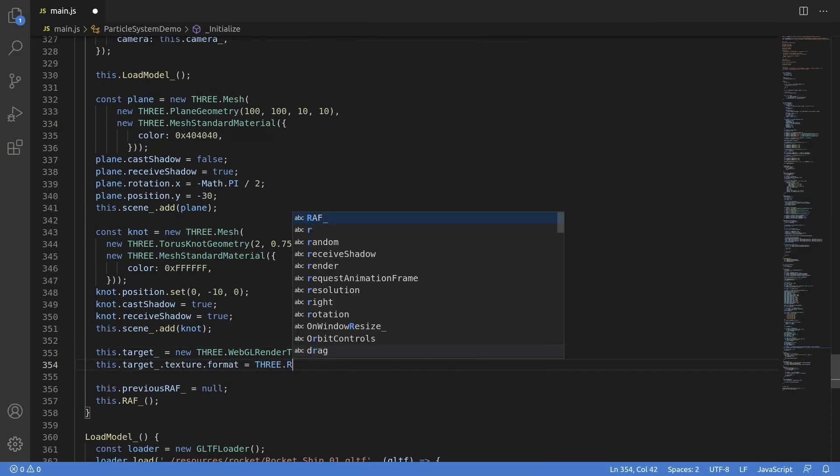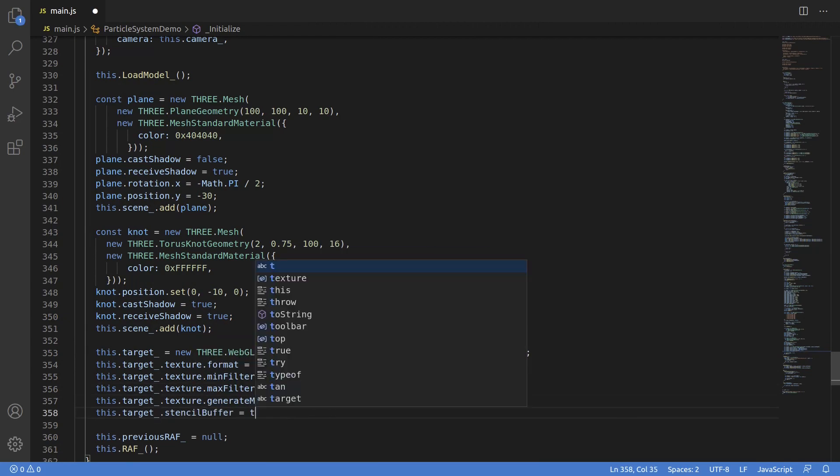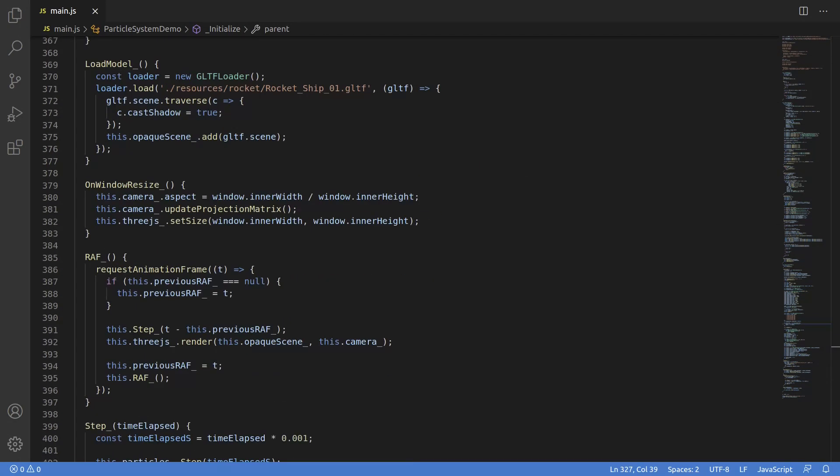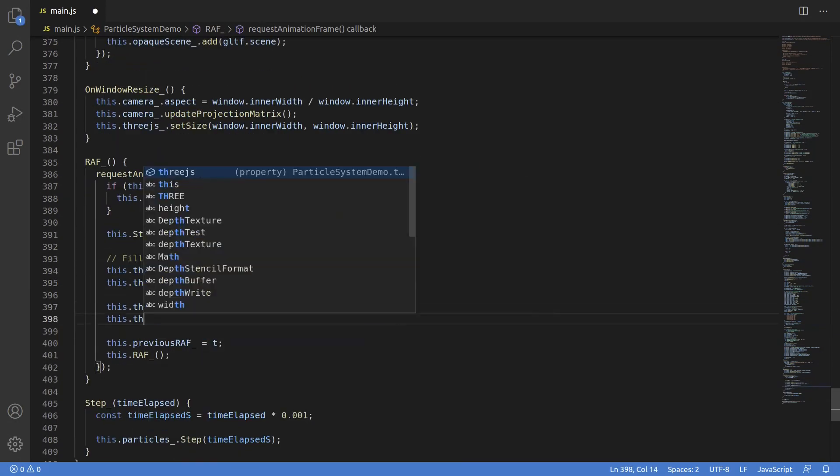Instead, what I'll do is simply split my objects into opaque and transparent, and render the opaque objects to a separate depth buffer first. This isn't ideal, but I'm just showing you how the technique works.